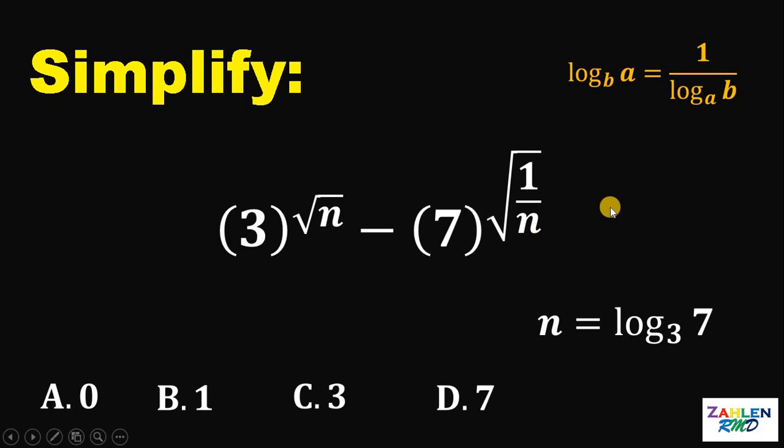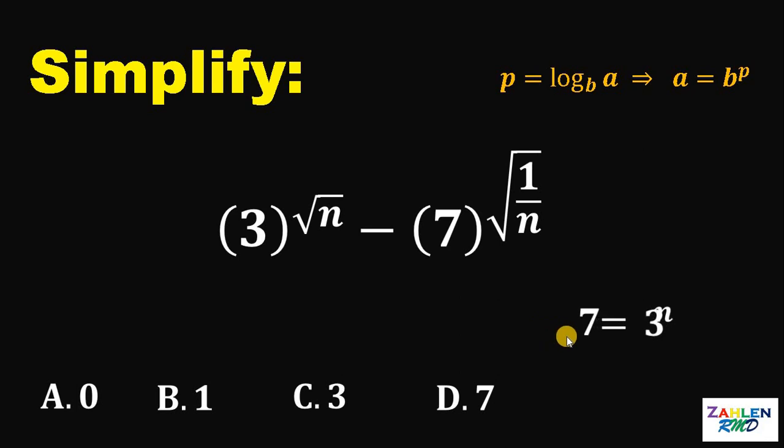Now, at this point, take note that if we have a logarithm equation P equals logarithm of A to the base of B, this can be written in an exponential form. So, this can be written as A equals B raised to P. Therefore, n equals logarithm of 7 to the base of 3 can be written as 7 equals 3 raised to n.